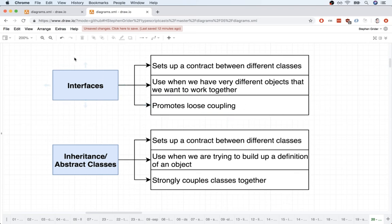So in general, we always want to first reach for interfaces as a solution to code reuse, unless we are in a scenario where we have some different objects that are very closely related. And in that case, it might make a little bit more sense to start thinking about inheritance and abstract classes.